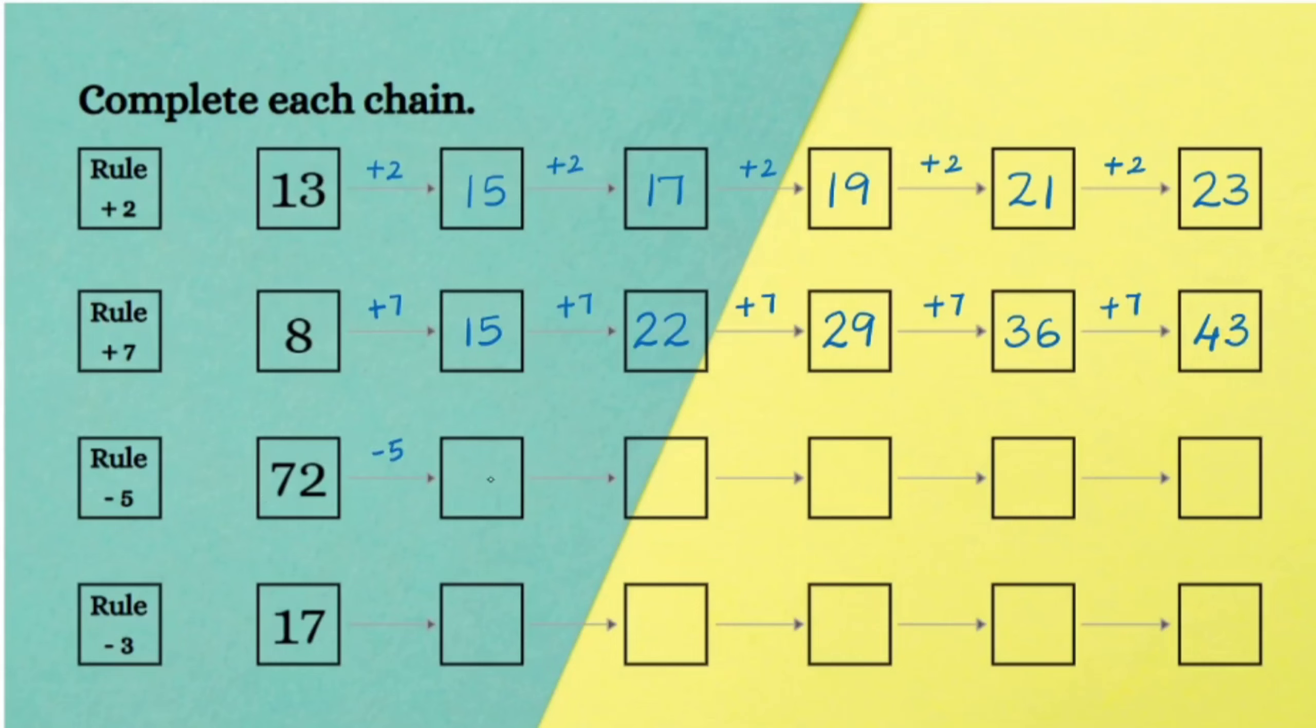The third question we are subtracting 5: 72 minus 5 gives us 67, 67 minus 5 is 62, and so on.